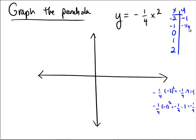Next, replace x with 0. Negative 1 fourth, 0 squared, equals negative 1 fourth multiplied by 0, and that's equal to 0.